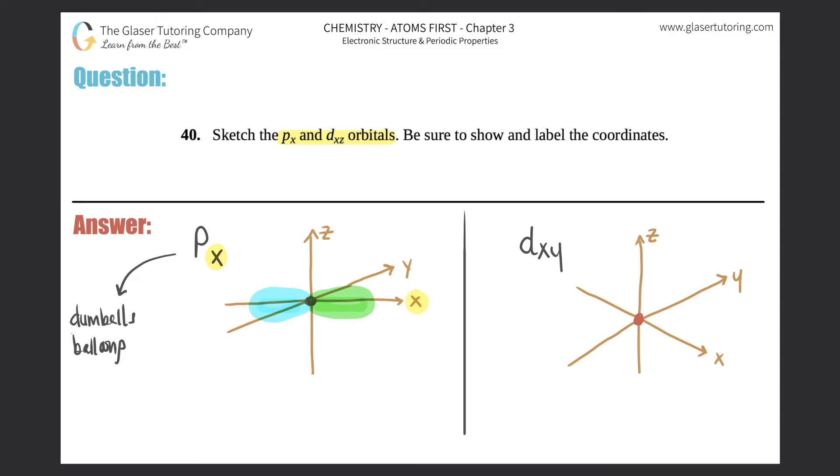Before I start with the d, I just want to get rid of the y here because it's supposed to be a z. So let me get rid of this and put a z here instead. Now with your d's, it's basically going to be an orbital between the x and the z axis. So here is the z, here is the x axis.